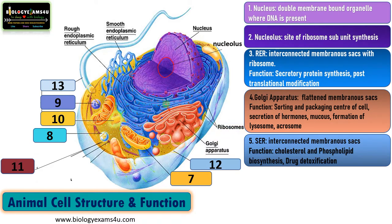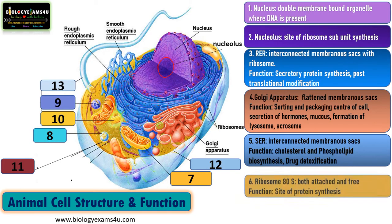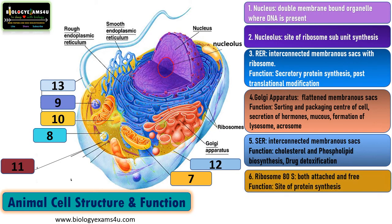The next organelle is the ribosome. Ribosomes are the site of protein synthesis in animal cells. The ribosome is 80S, as in all other eukaryotes. Ribosomes are present attached to the rough endoplasmic reticulum or freely distributed in the cytoplasm. Ribosomes are nanomachines that make proteins.